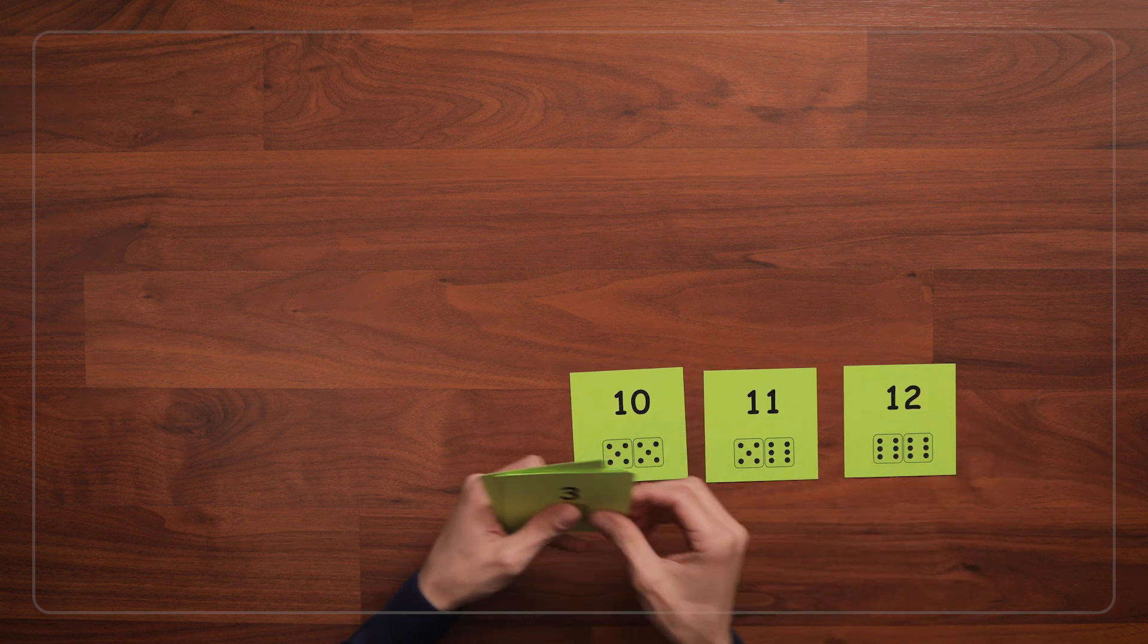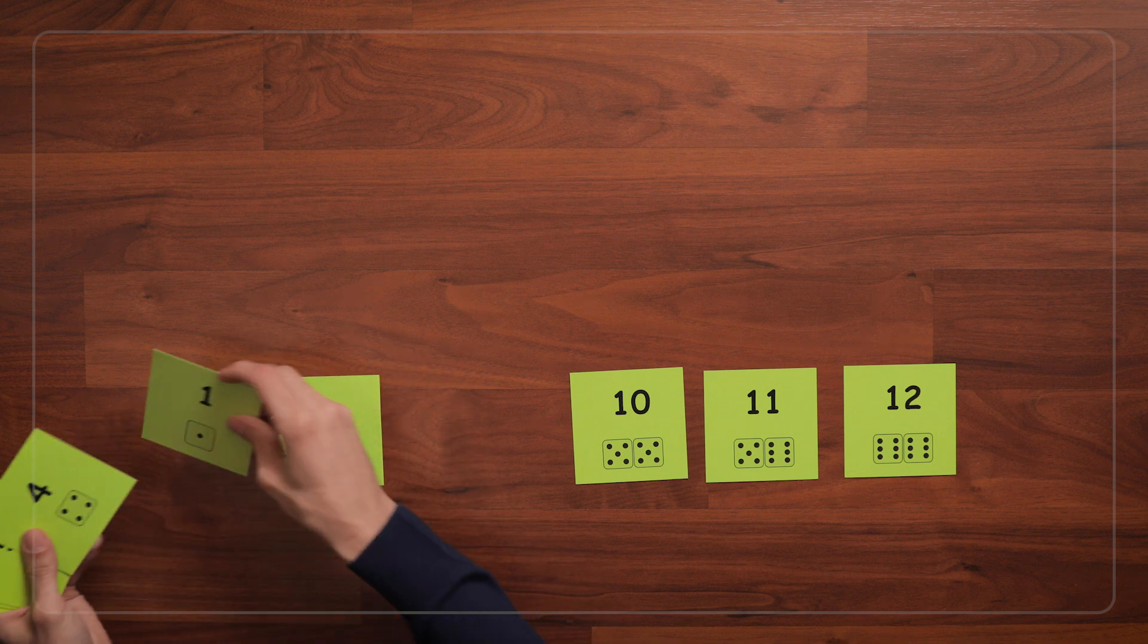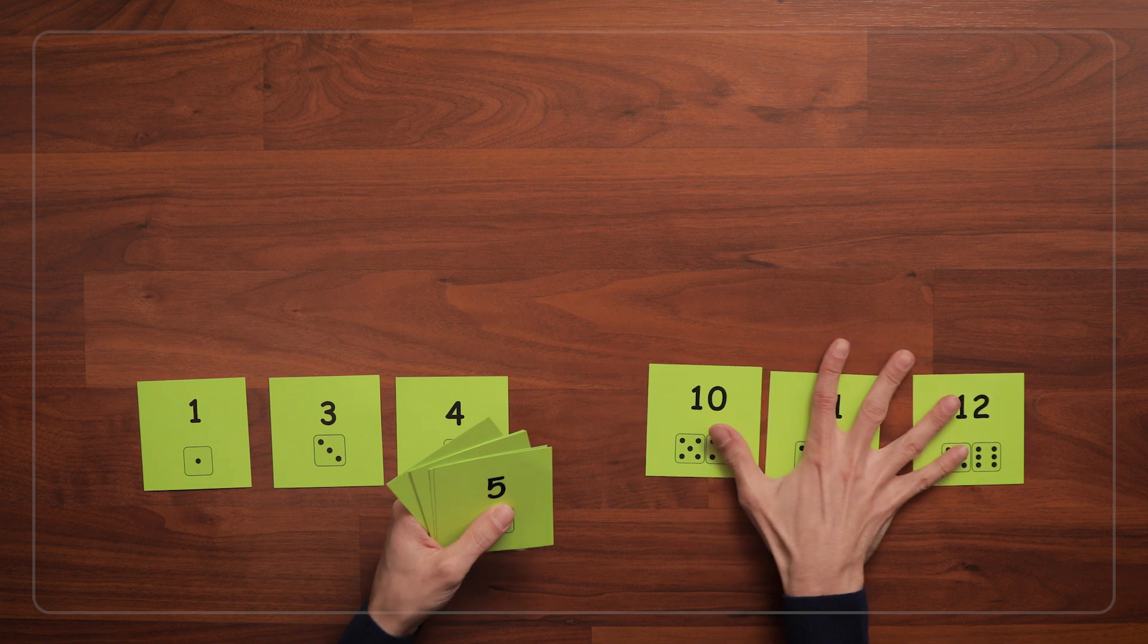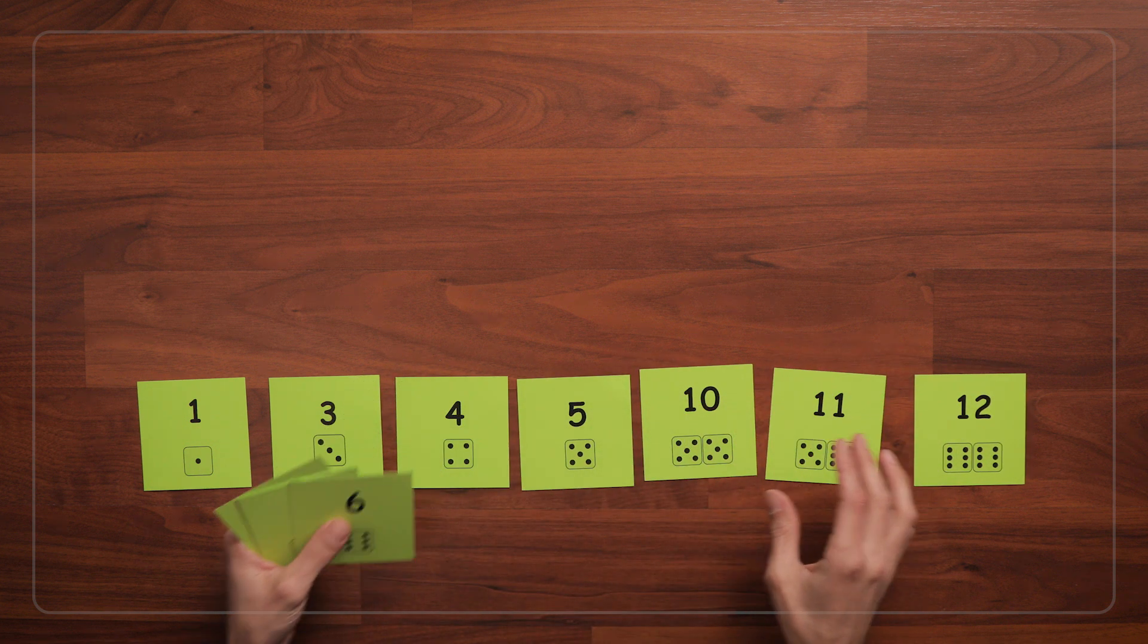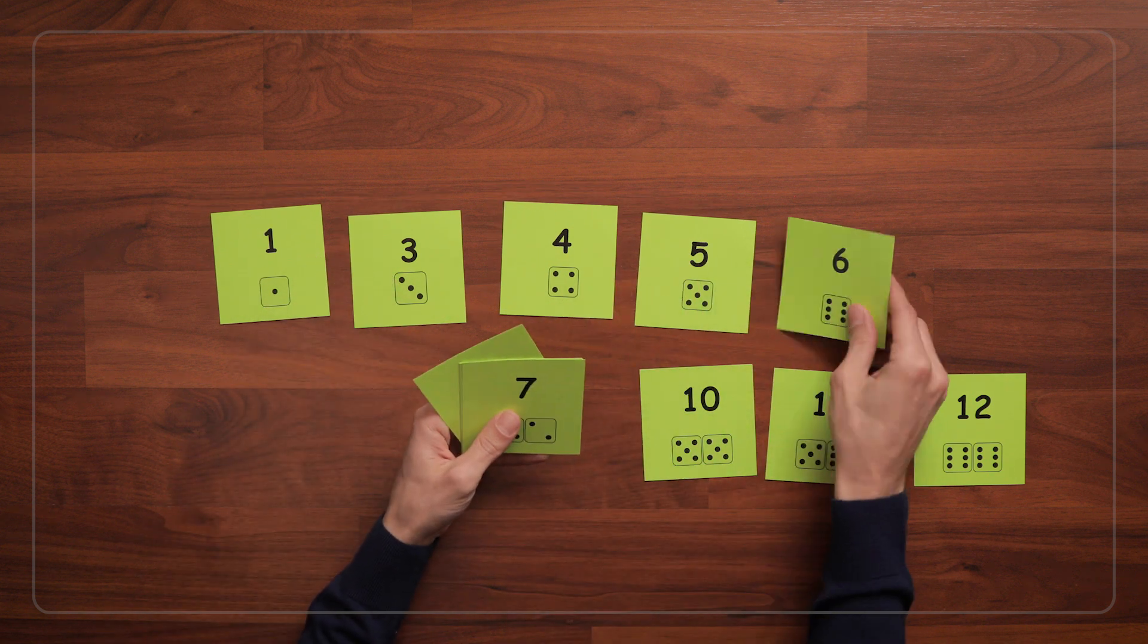Notice how the children arrange the cards. Do they order them from left to right? Do they leave space between the 4 and the 6 to place the 5 card? There is a lot to think about when laying out the numbers in order, and you can even see here I'm running out of space, so I have to think about what I'm going to do. I think I'll make two rows.